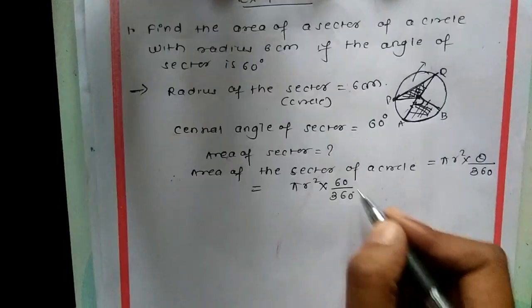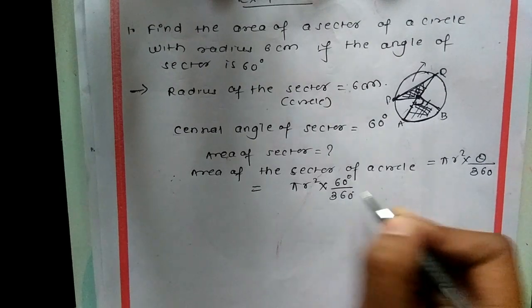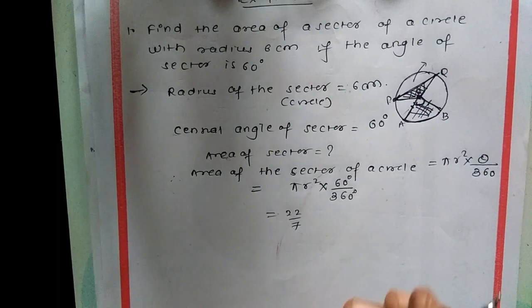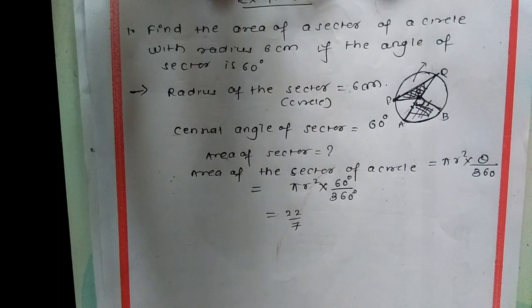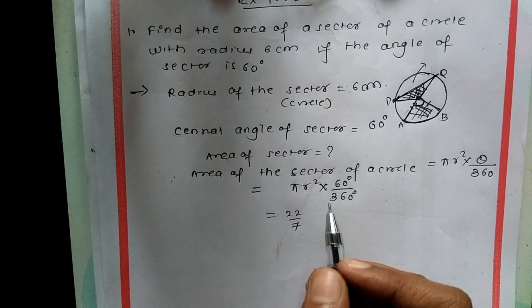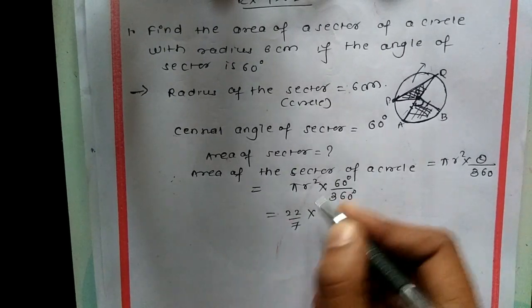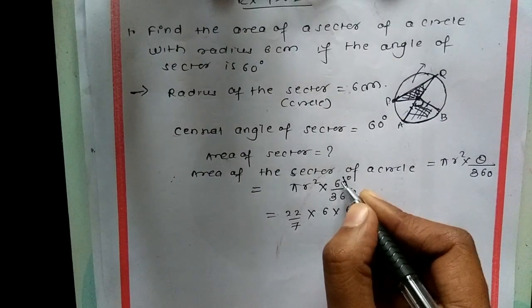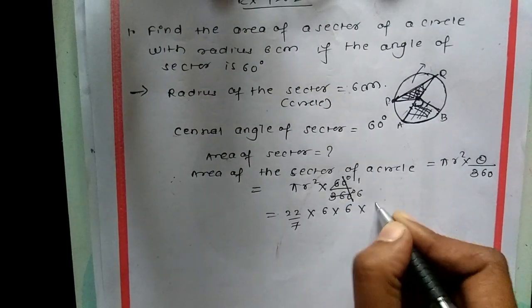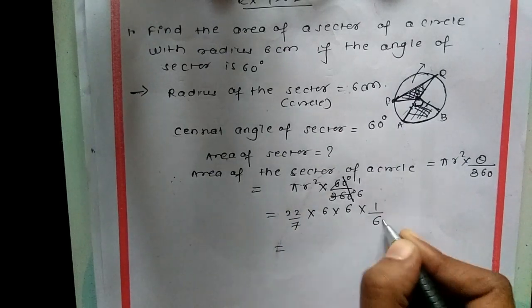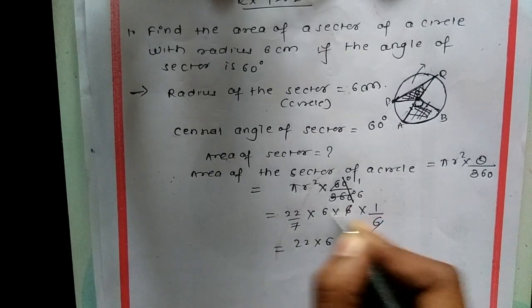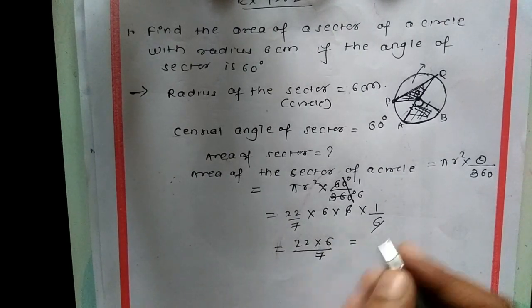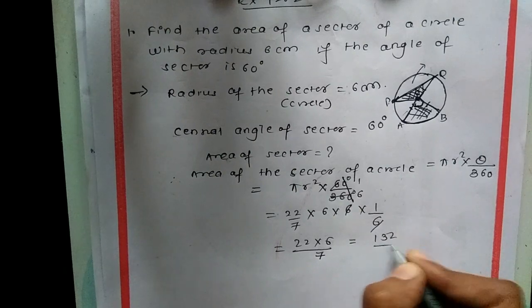In the question, π is given as 22/7. So we have 22/7 × 6 × 6 × 60/360. Simplifying: 60/360 = 1/6. So we get 22/7 × 6 × 6 × 1/6 = 22 × 6/7 = 132/7.